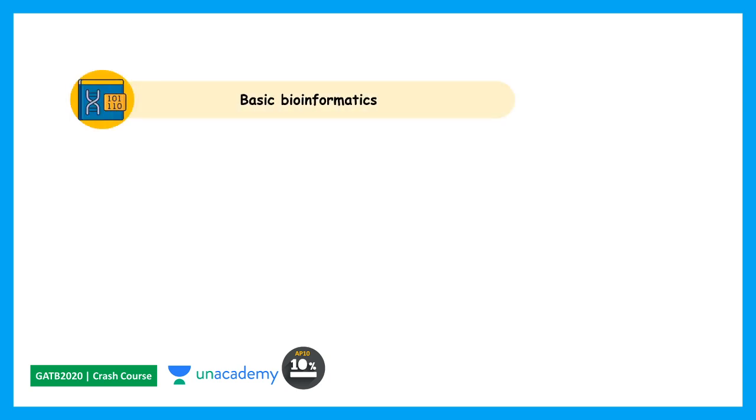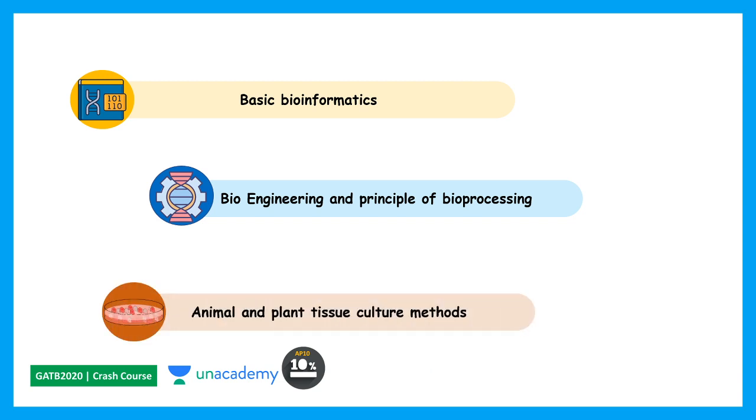Now, there are three major topics which are newly added in this exam: basic bioinformatics, bioengineering and bioprocessing, and animal and plant tissue culture. By the way, animal and plant tissue culture methods are also added in JAM syllabus, so if you are a JAM aspirant this would be useful to you as well.